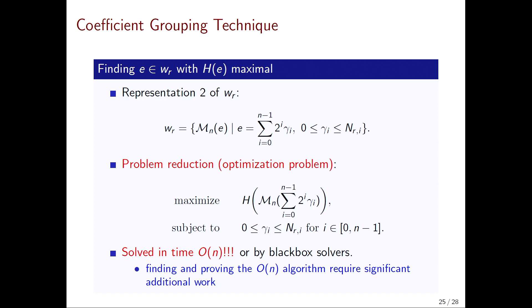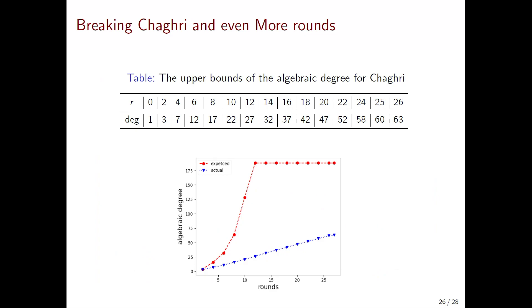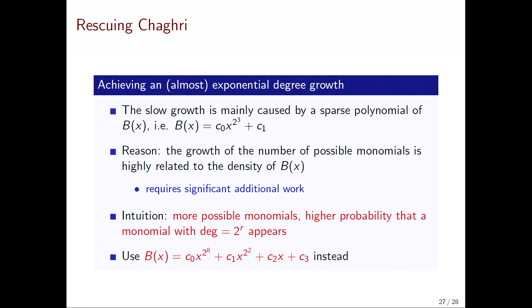For Jaggery, the algebraic degree increases linearly, and we can attack 26 rounds. If we carefully look into the coefficient grouping technique, we can see the main problem is caused by the sparsity of B. This requires significant additional work, which you can check in the paper.